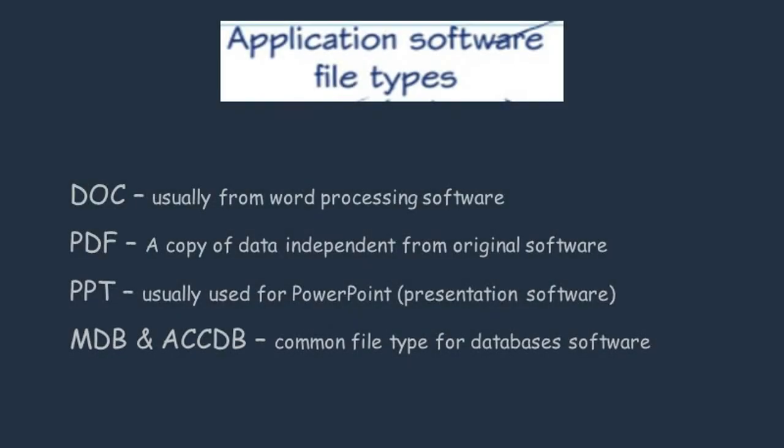The file types on the screen are used for applications and software. DOC is usually used for documents from word processing software. The next one is PDF, which is a copy of data independent from the original software — an example could be your CV. PPT is usually used for PowerPoint slides. The last two file types are commonly used for database software, so in unit 2 you might have seen MDB, because it's used for Microsoft Access.